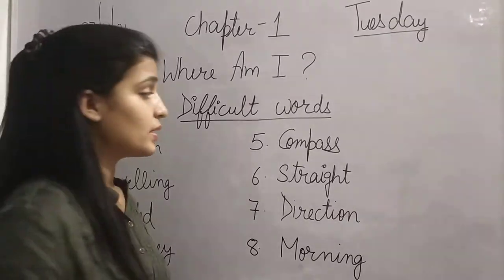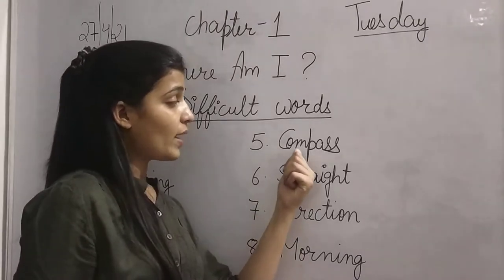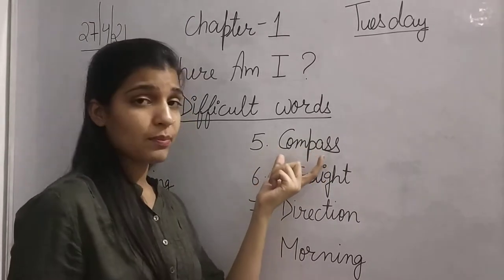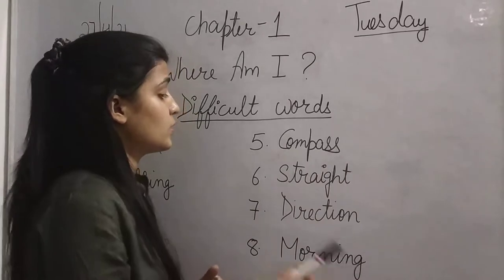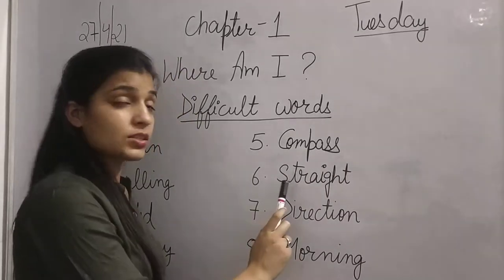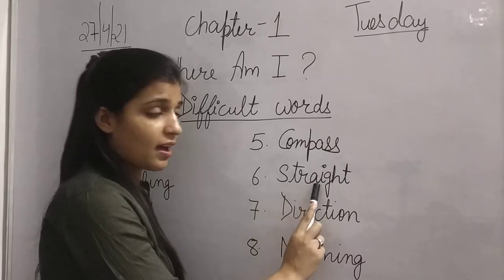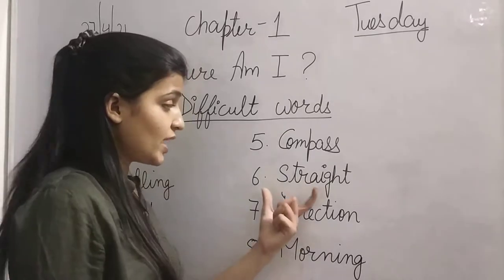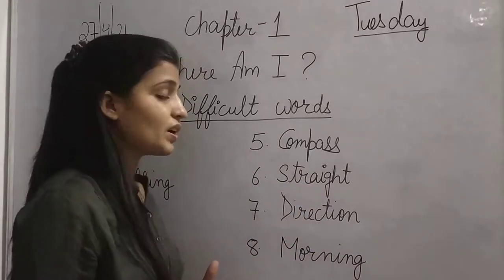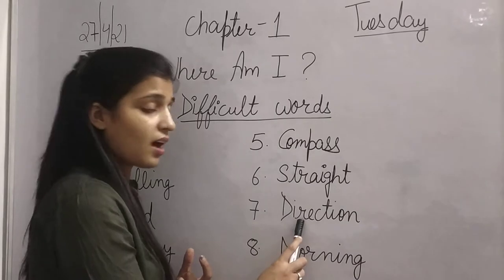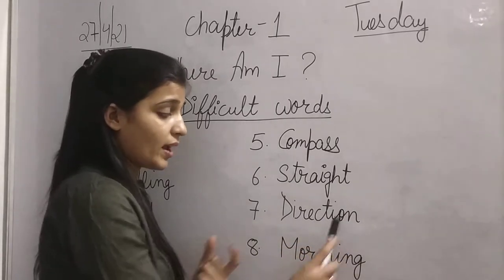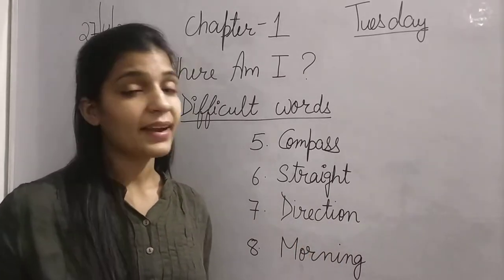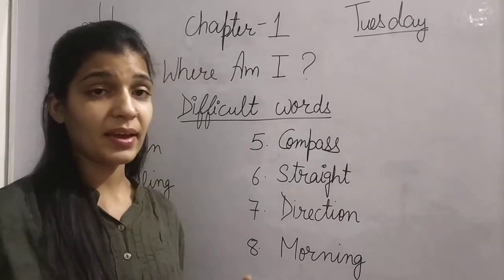The next word is compass — C-O-M-P-A-S-S. It is a type of tool. The next word is straight — S-T-R-A-I-G-H-T. What do you mean by straight? Straight means 'siddha.' The next word is direction — D-I-R-E-C-T-I-O-N. What do you mean by direction? Disha. How many directions do we have?